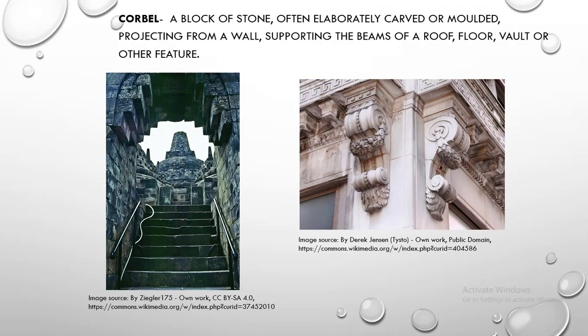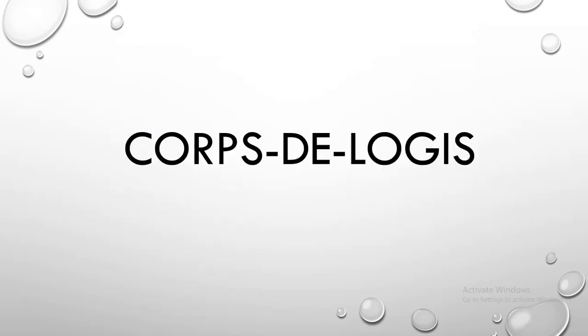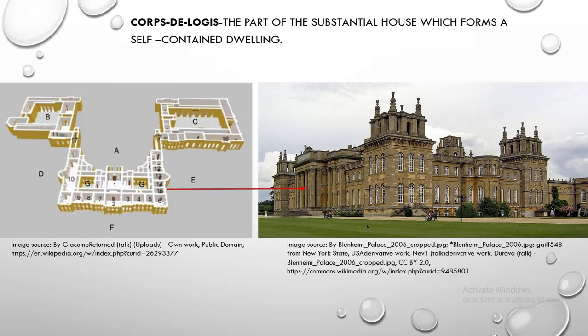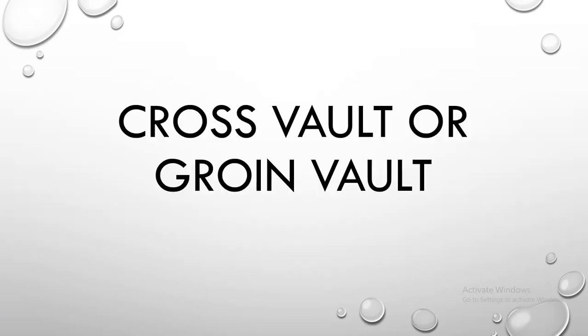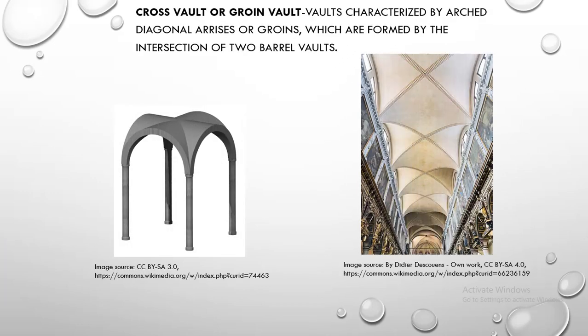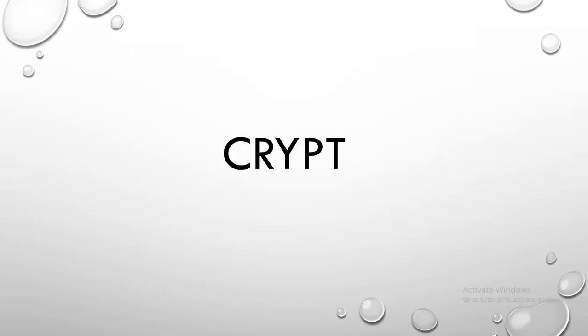Corbel. Corbel is a block of stone, often elaborately carved or molded, projecting from a wall, supporting the beams of a roof, floor, vault or other feature. Cordologis. Cordologis is the part of a substantial house which forms a self-contained dwelling. Cross vault or groin vault. Cross vault or groin vault are vaults characterized by arched diagonal arises or groins, which are formed by the intersection of two barrel vaults.